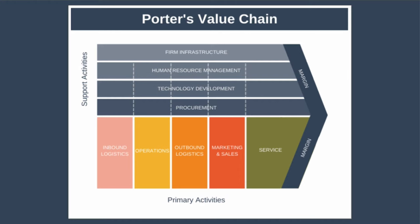The first support activity is procurement — the process of purchasing the inputs you need, also known as purchasing. It involves finding new suppliers and negotiating the best price. Next, we have human resource management. This activity involves hiring, training, rewarding, employee well-being, and retaining good employees. In today's knowledge economy, finding and retaining talented employees can be a significant source of competitive advantage, which is why many companies even have their own talent management departments.